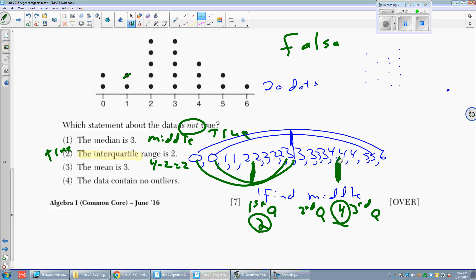The mean is three. Add up all the numbers. And the sum is 55. 55 divided by 20 is not three. So that one is wrong. That's the false one.